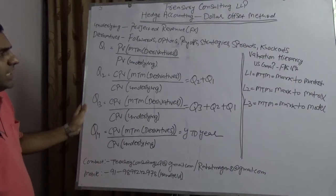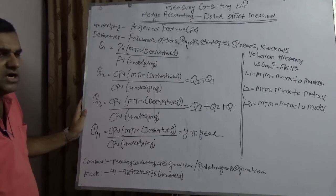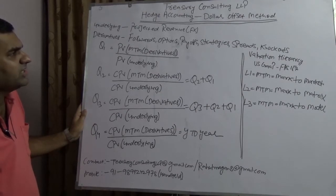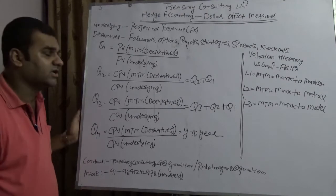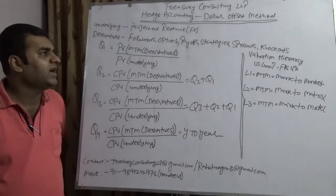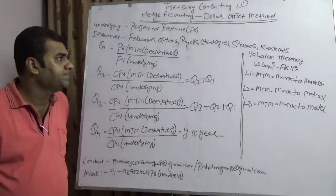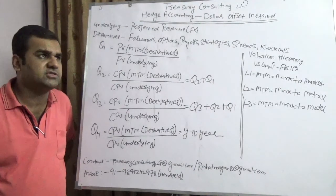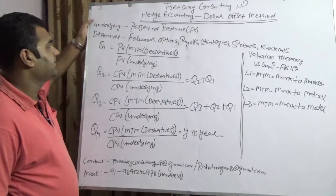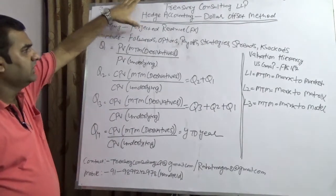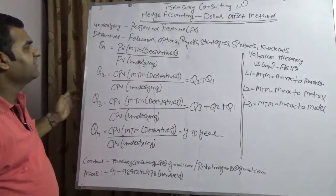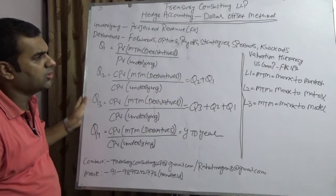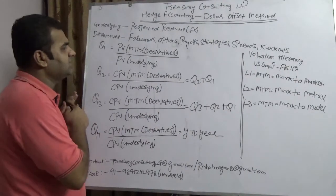Hedge accounting mode is of two types. The first type is qualitative hedge accounting and the second type is quantitative hedge accounting. When it comes to qualitative hedge accounting, there is a method called the dollar offset critical terms method. When it comes to quantitative hedge accounting, we have the most beautiful method known as the dollar offset method. In hedge accounting, there are always two pillars: one pillar is the underlying, meaning projected revenue, and the second pillar is derivatives — forwards, options, payoffs, strategies, spreads, knockouts, non-knockouts. Here we are taking a simplistic example of forward contracts.